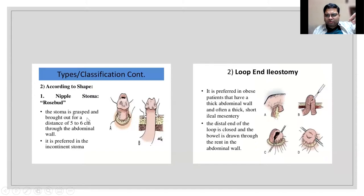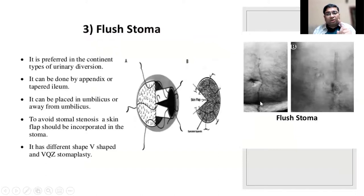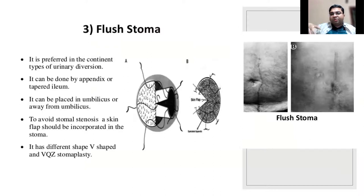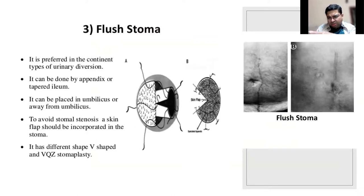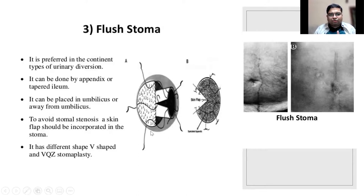Types of stomas: flush stoma and the nipple/bud (spout) stoma; the loop stoma is like a loop colostomy. The flush stoma is used with the Mitrofanoff principle - using the appendix as a continent catheterizable channel. The appendix acts as a continent mechanism: the tip end acts as an intussusception valve, and you can easily pass CIC catheters. A V-shaped skin flap (VQZ stoma plasty) is used for the flush stoma.